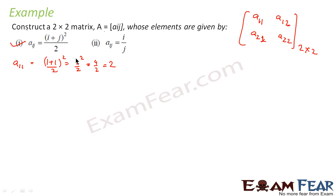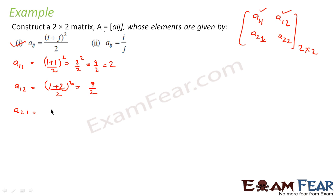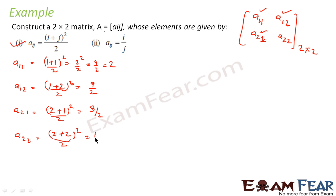Similarly, a12 = (i+j)² / 2 with i=1, j=2, so (1+2)² / 2 = 9/2. So a12 is 9/2. Next, a21 with i=2, j=1: (2+1)² / 2 = 9/2. And a22 with i=2, j=2: (2+2)² / 2 = 16/2 = 8.